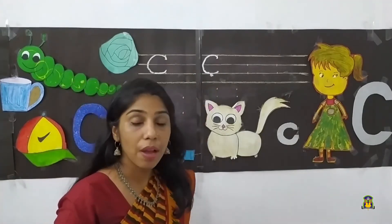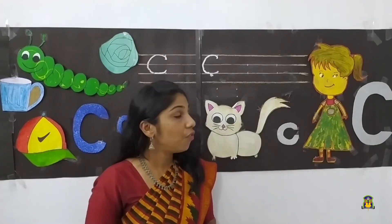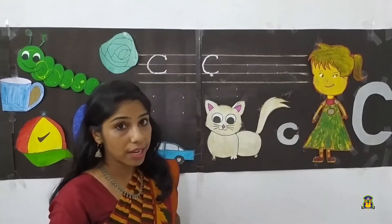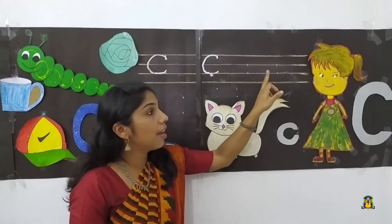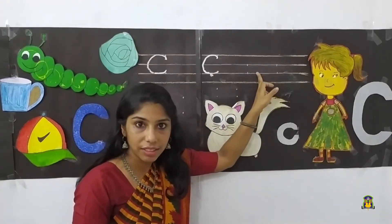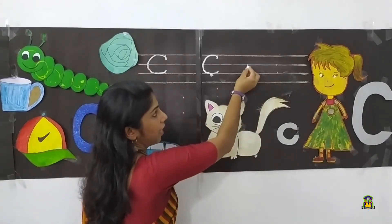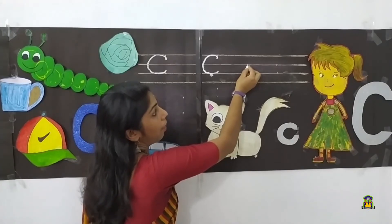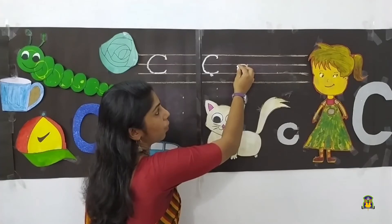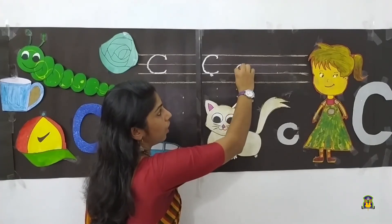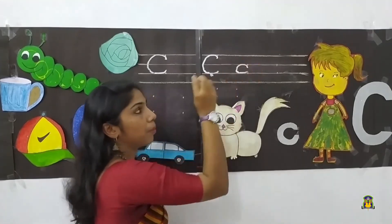Next, ma'am will teach you how to write small letter C. We can write small letter C in between the second line and the third line. Keep pencil down the second line and make it curve. Go down to the third line and go up a bit.